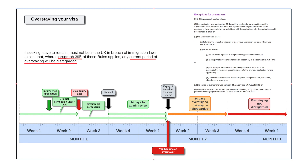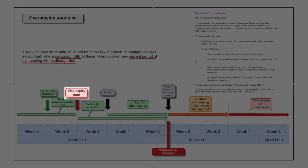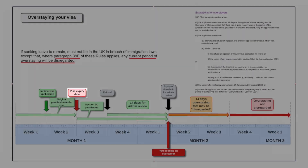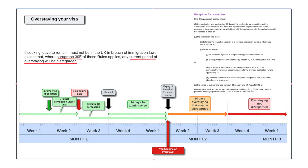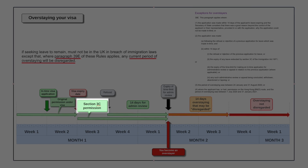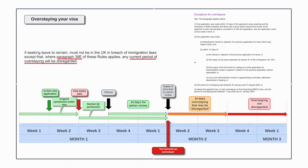Now, in this diagram you can see we've got the visa expiry date and then there's a period of this Section 3C permission — Section 3C leave as they call it — before a decision is made. Here the decision is a refusal. So what happens then? You've made an in-time application, your current visa has expired, and then there's a refusal.